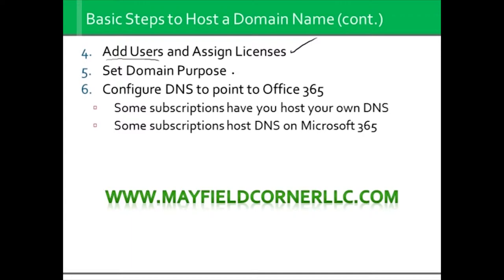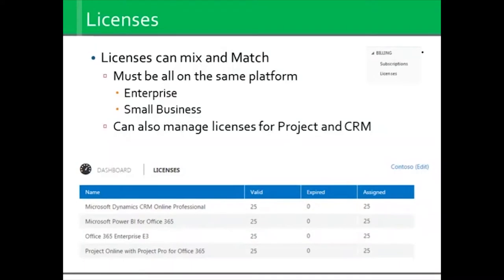You want to set a domain purpose — usually just email — and we've got DNS to point to Office 365. Licenses can be mixed and matched. In a licensing console, you might see CRM Professional, Power BI, Office 365 Enterprise E3 — where E3 is the level of license — and Project Online with Project Pro for Office 365. You'll see I've got 25 valid licenses of each. None of them have expired, and we've actually assigned all 25.